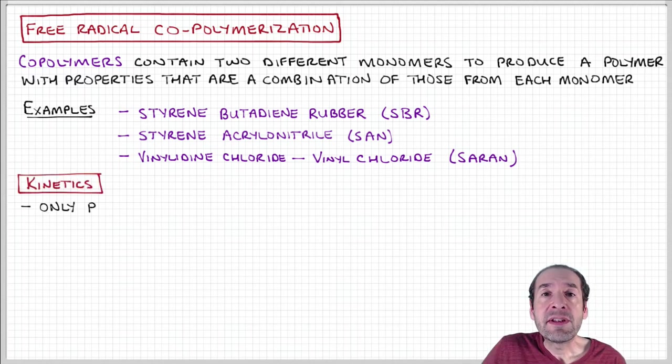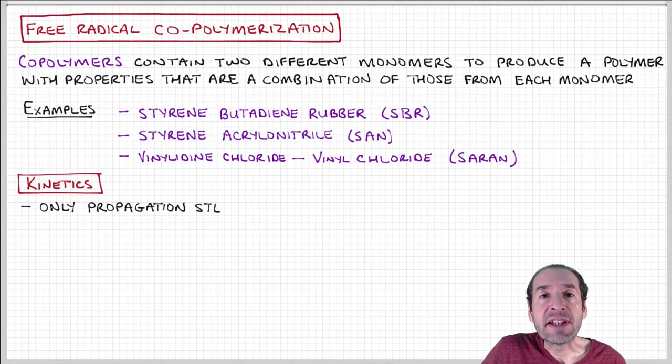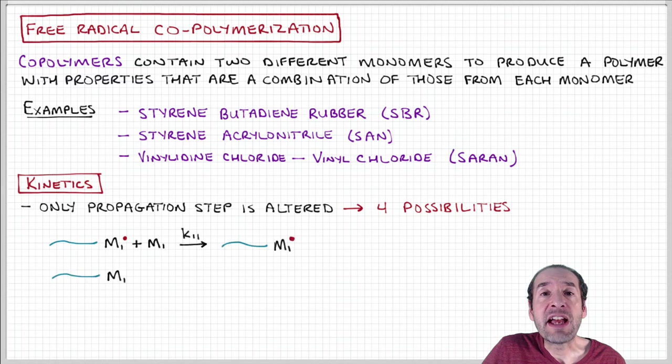Let's think about this, at least as a starting point, in the context of free radical polymerization. We know that this process can be divided into three steps: initiation, propagation, and termination.